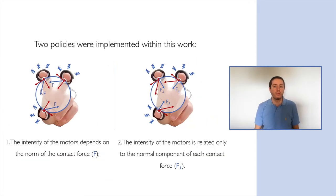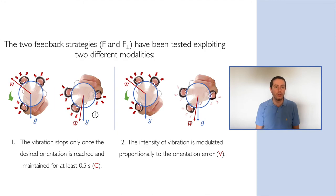We tested two different policies for the feedback generation. The former generates vibration with an intensity proportional to the norm of the contact forces, while the second approach generates vibration with an intensity depending only on the normal component of the contact force. Additionally, we tested two different modalities to inform the user about the reaching of the desired orientation.